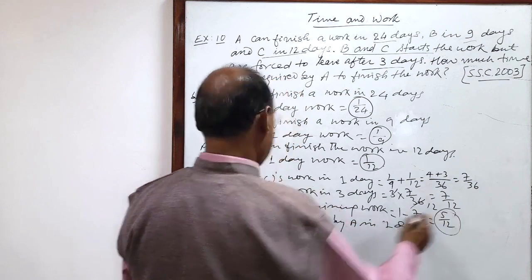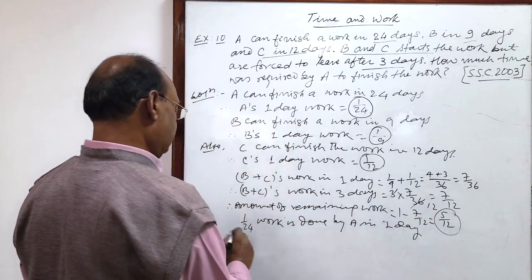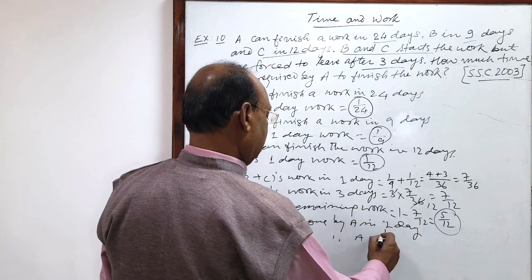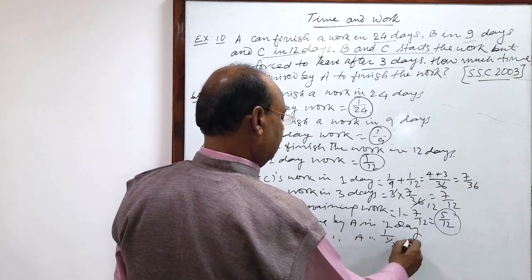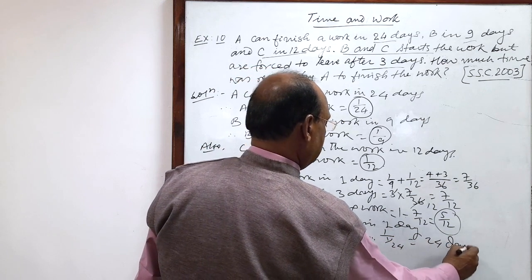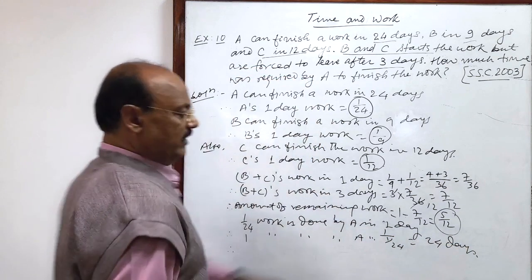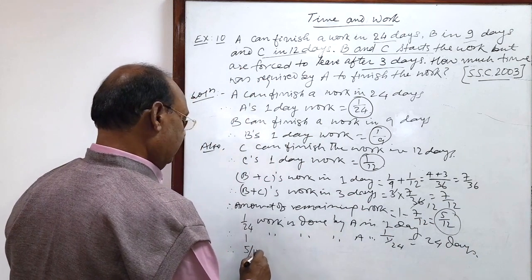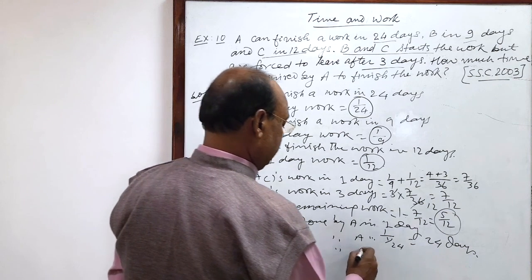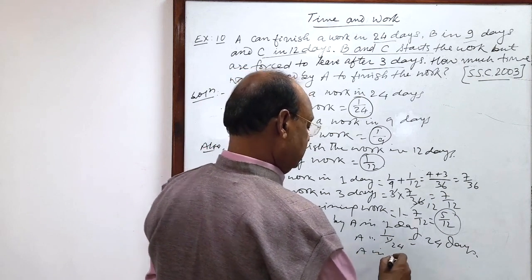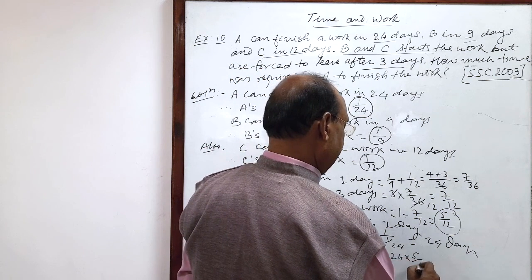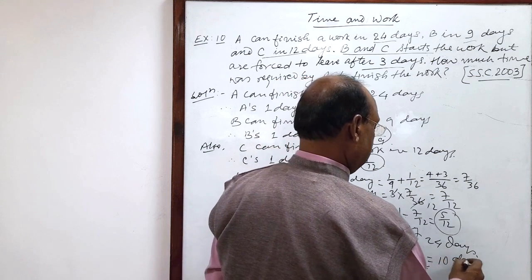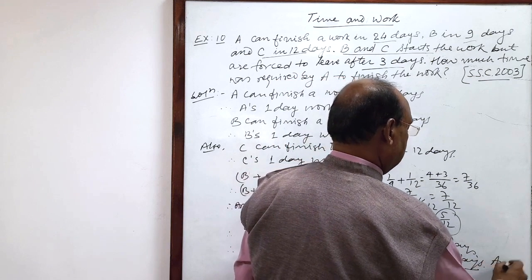So, remaining is 5 by 12. So, by unitary method, 1 work is done by A in 1 upon 1 by 24. This is 10 days. So, this is the answer.